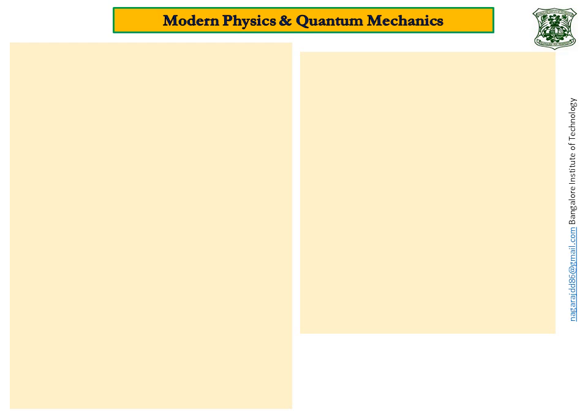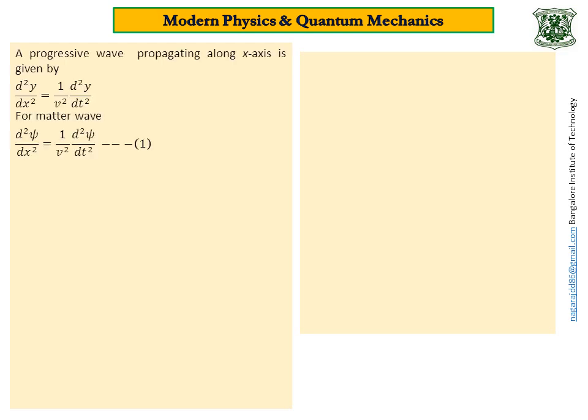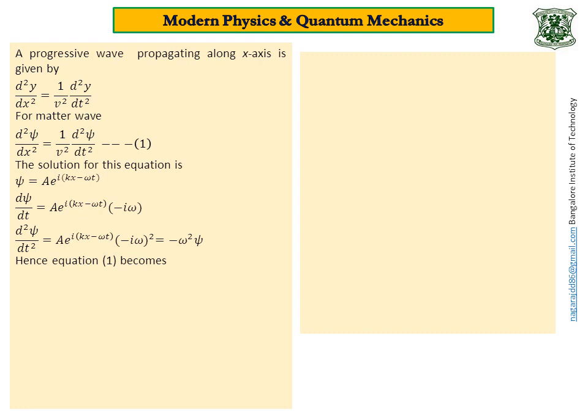Here we go with the setting up of Schrödinger one-dimensional wave equation. A progressive wave propagating along x-axis is given by d²y/dx² = (1/v²) d²y/dt². Students, you might have studied this equation already in waves and oscillations. This equation represents a progressive wave propagating along x-axis. This is a second order differential equation. This can be rewritten in the form of ψ for a matter wave. So y is replaced by ψ.